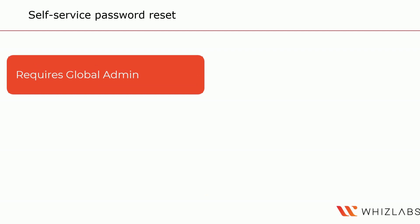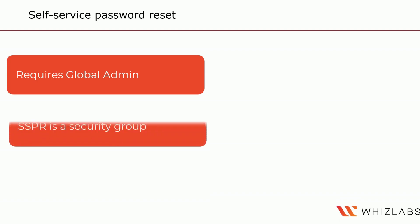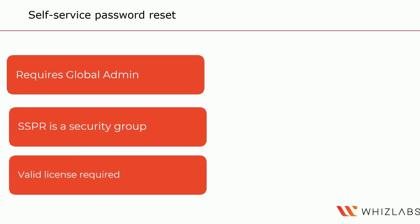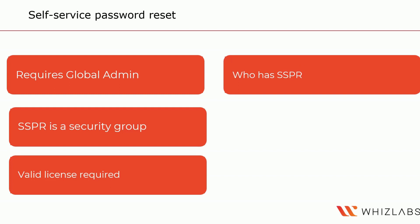Looking at self-service password reset, or SSPR, it requires an Azure AD account with global administrator privileges to manage SSPR. This account can always reset its own password no matter what options are configured. SSPR uses a security group to limit the users who have this SSPR privilege, and all users in your organization must have a valid license to utilize SSPR. In the Azure portal, there are three different options available for SSPR: none, selected, and all.